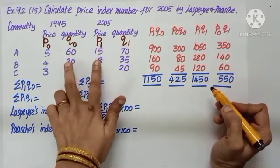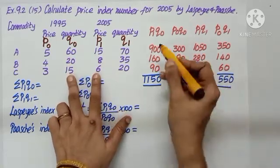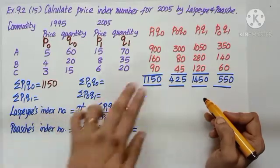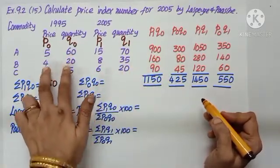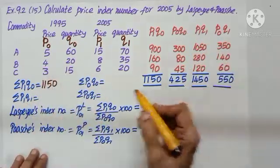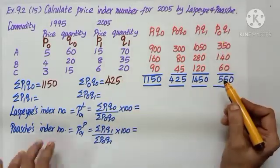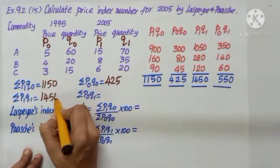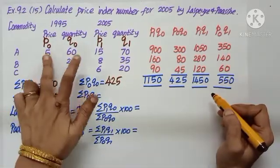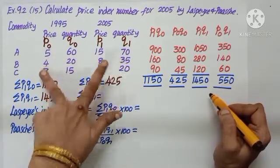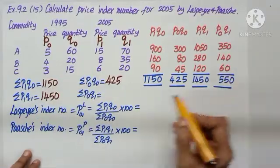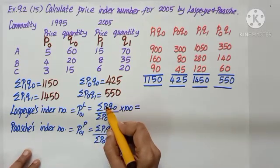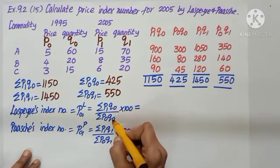Then this is simple. We multiply P1 and Q0, so we will point out and multiply so that we don't make mistakes. Find the total and write it. Sigma P1Q0 is 1150. P0Q0, these two, keep pointer and multiply, total it, 425. P1Q1, these two, multiplying, I get 1450. P0Q1, 5 into 70, 4 into 35, 3 into 20, let us find the total, it is 550. Laspeyre's formula: sigma up and down, P1 in the numerator, P0 in the denominator, put Q0 up and down. Remember to write into 100. Similarly Paasche's, sigma up and down, P1 by P0, Q1 will come in the numerator and denominator, again into 100.